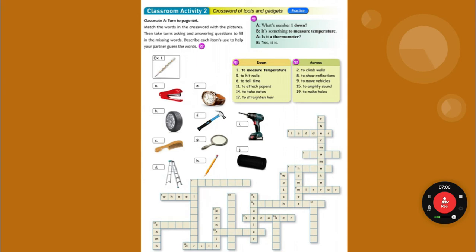To move vehicles — that's nine across — that is a wheel, W-H-E-E-L. F is, of course, a hammer, H-A-M-M-E-R, which is five down. To attach papers — that's 11 down — that's a stapler, S-T-A-P-L-E-R.